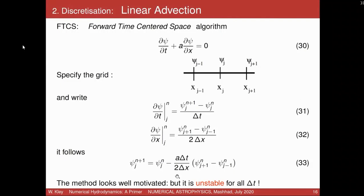I will briefly discuss a very simple looking scheme called Forward Time Centered Space (FTCS). You have your spatial grid with points X_J, psi_J, X_{J+1}, psi_{J+1}. If we have constantly spaced grid points, we don't really need the actual locations X_i in our difference equations — just delta_x. For the time derivative we write the simple forward difference; for the spatial derivative, to have a spatially centered scheme, we take psi_{J+1} minus psi_{J-1} divided by 2·delta_x.